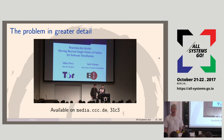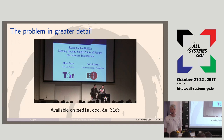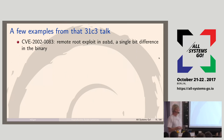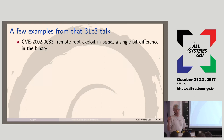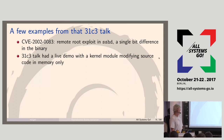I'll briefly explain the problem. A talk from three years ago by Mike Perry and Seth Schoen explains in great detail why reproducible builds are useful. CVE-2002-83 was a remote exploit in SSHD, and the difference was one bit in the binary. The mistake was an equals comparison which should have been greater-equals — one bit out of 500 kilobytes. If you just look at the bits, you will not see it.